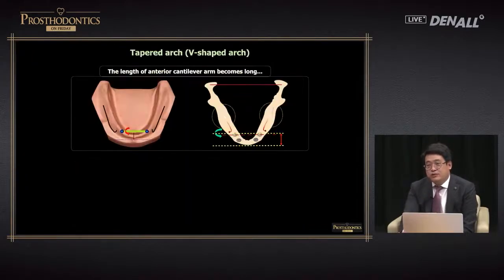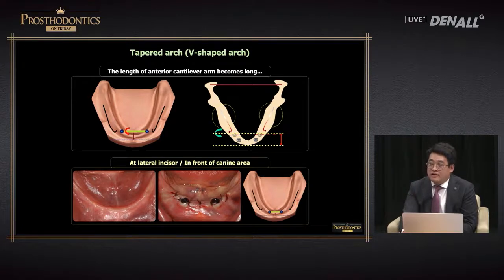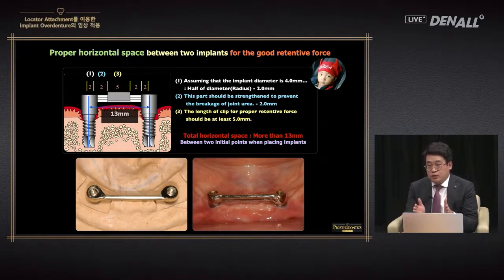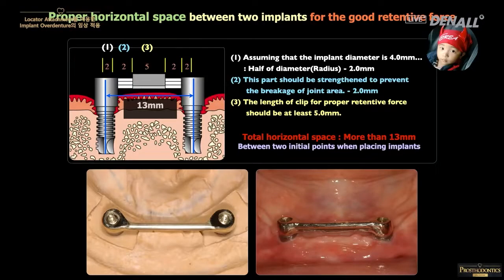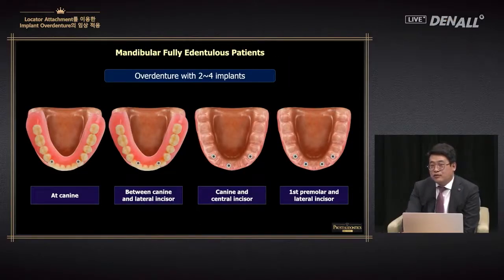If the arch shape is U-shape, the position is not as critical, but canine area is preferred. In the case of V-shape, if you place it in the canine area the anterior cantilever becomes elongated — you need to place it mesial to the canine. When using bar type with a clip, 12–13 mm of clip length is required for maintenance. If placed too close, the bar becomes shorter and maintenance capability goes down. You need to consider what kind of attachment you'll use and choose the implant position accordingly.